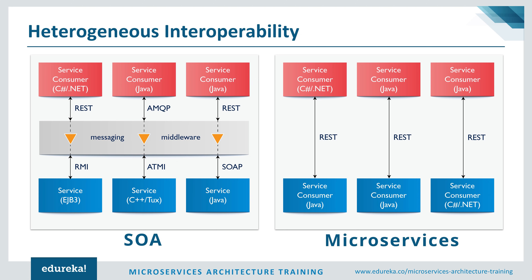In microservices, we do not have any broker or messaging middleware. The communication happens directly between application to application, even if they are in different programming languages, structurally different, or built on different grounds. For example, if a C# or .NET application is communicating with a Java application, it happens with the help of a REST API — there is direct communication between the two services. So there is no middleman; communication goes directly to the other application.